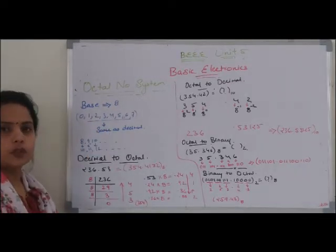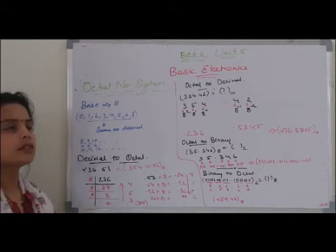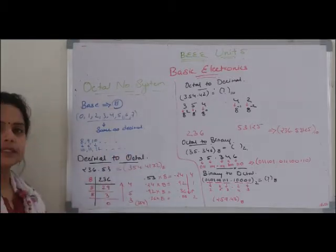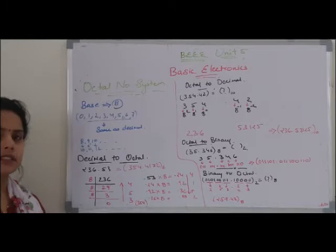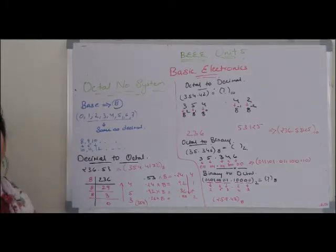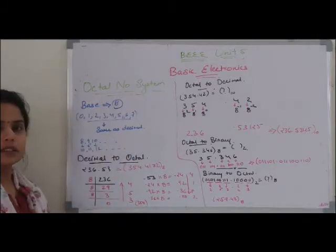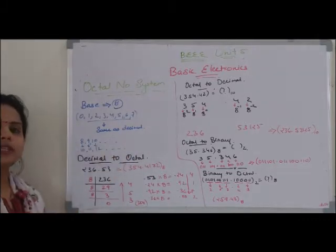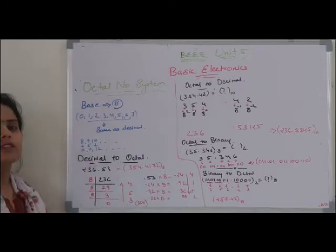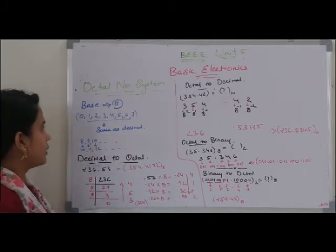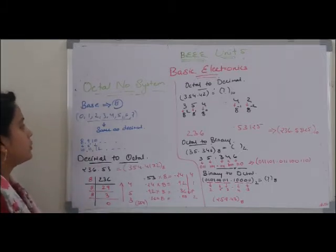Octal number system — as I have already mentioned, the base of the octal number system is 8. Since the base is 8, the number of digits we use to denote any number are 8 digits: 0, 1, 2, 3, 4, 5, 6, and 7. These are the digits used to denote any number in the octal number system.